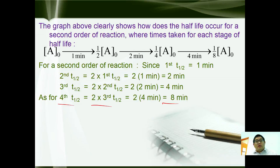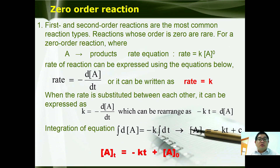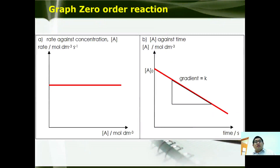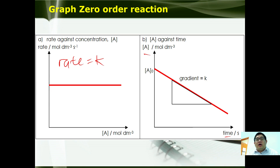Finally, for zero order reaction — first and second order reactions are the most common; reactions whose order is zero are rare. For zero order, A gives product, so the rate equation is rate equals k[A]⁰ equals k. Substituting: d[A]/dt equals k, rearranged as negative k dt equals d[A]. Integration gives [A]t equals negative kt plus [A]₀. The graph of rate against concentration shows that concentration does not influence rate. The graph of concentration against time is a straight line with negative gradient, unlike first and second order which are curves. All three orders of reaction have now been introduced.